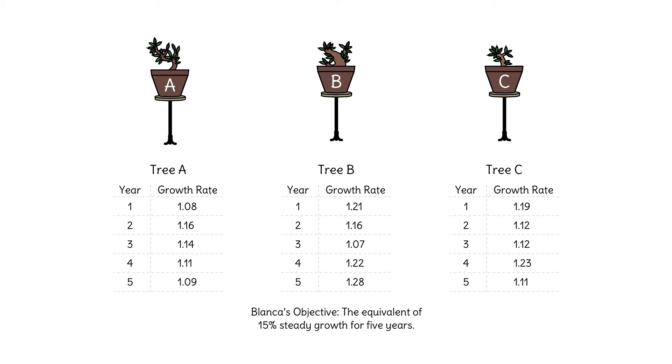It's hard to tell from the data which of these three trees gives a five-year result that is closest to a 15% annual growth rate. To evaluate each tree, she needs to find the steady growth rate for each tree that would give the equivalent end result.